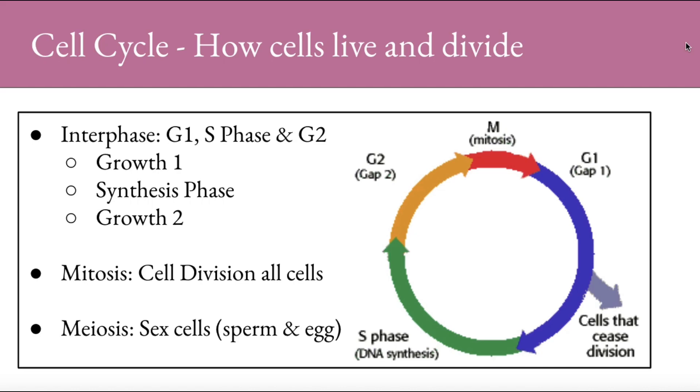Let's look at what the cell does during its lifetime called the cell cycle. This is how cells live and divide. You can see from the diagram on the right side that the cells spend most of their time in interphase. Interphase is split into three parts: Growth one, synthesis phase. Synthesis means to create, and growth two.